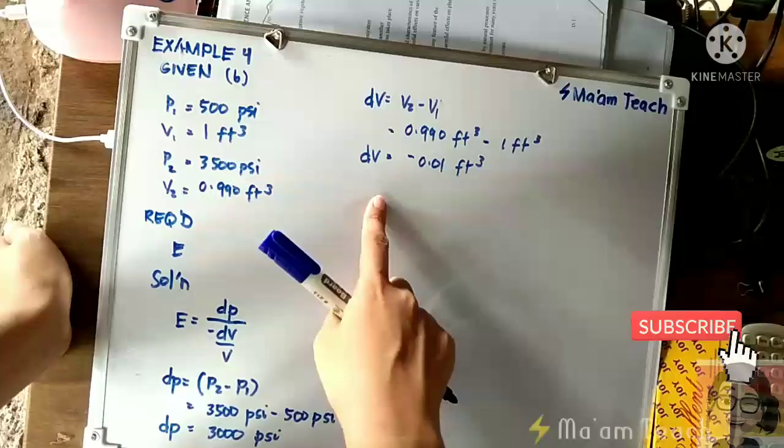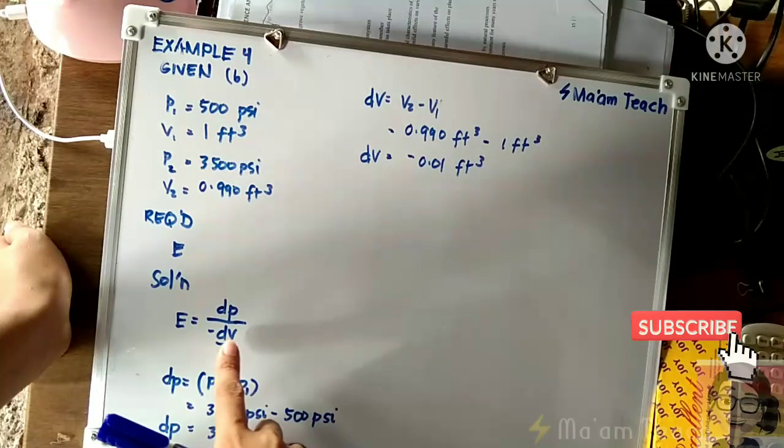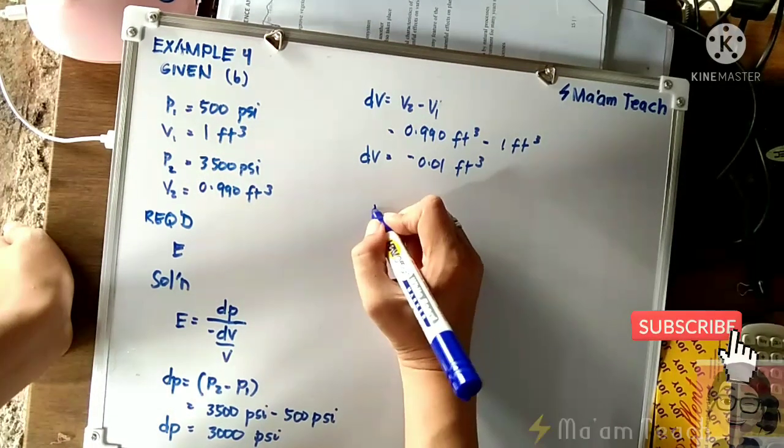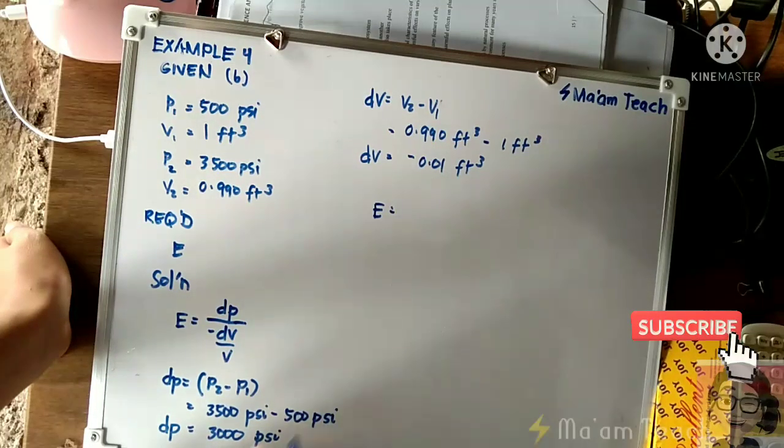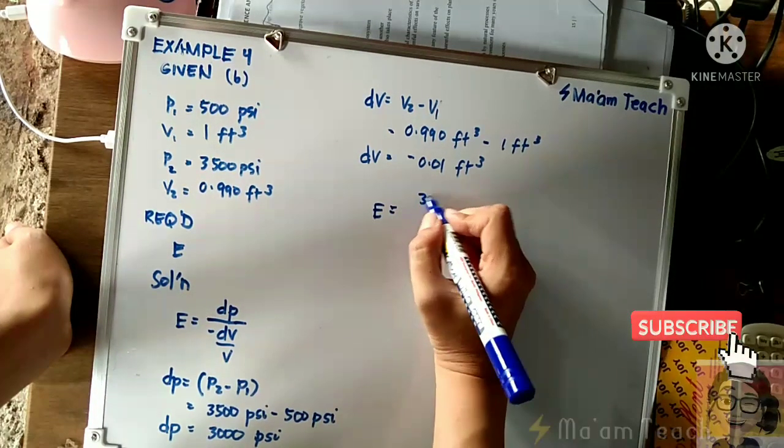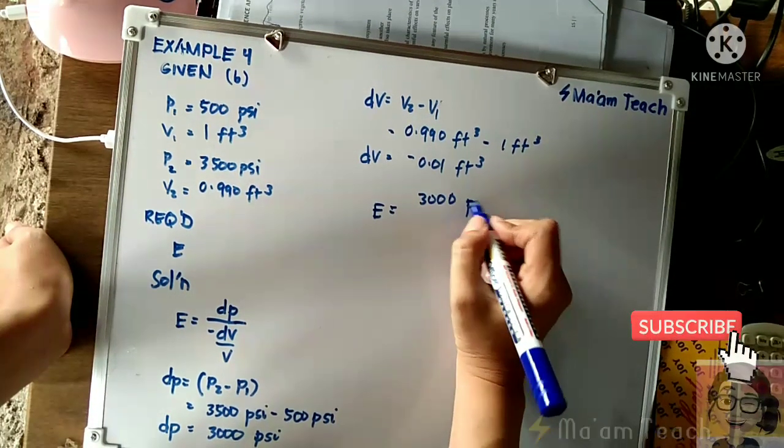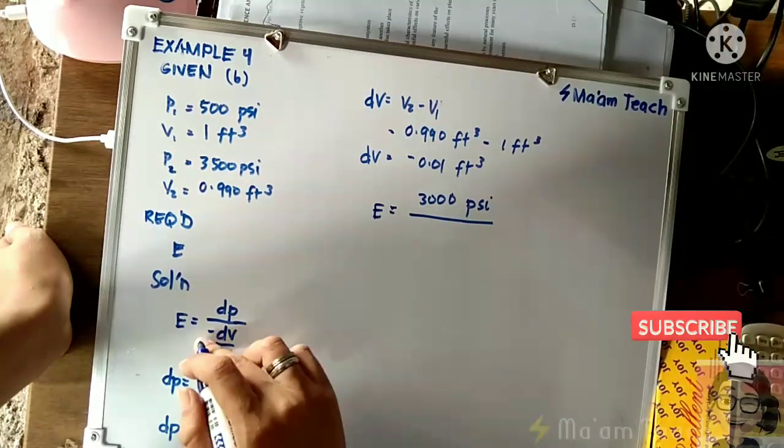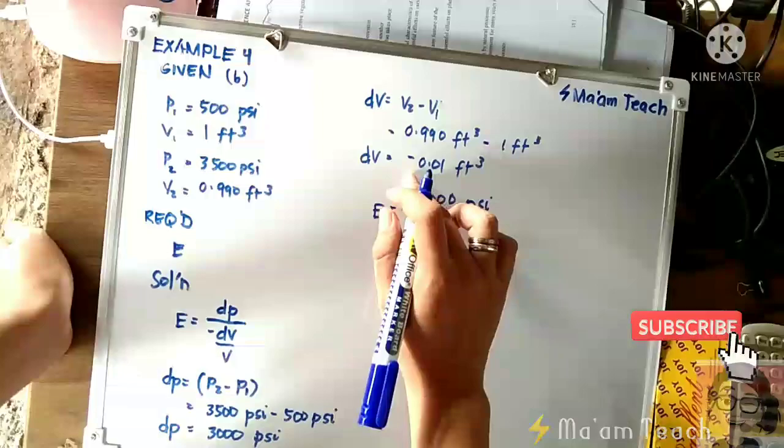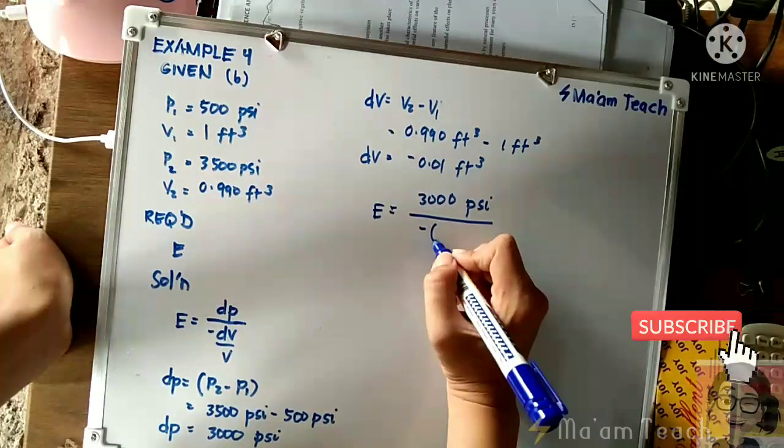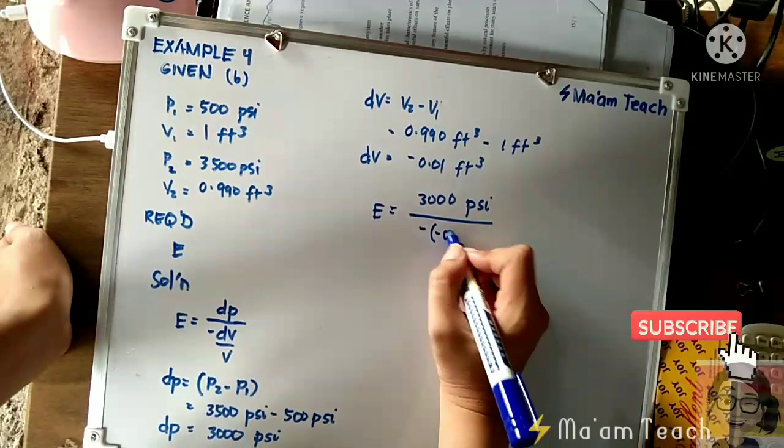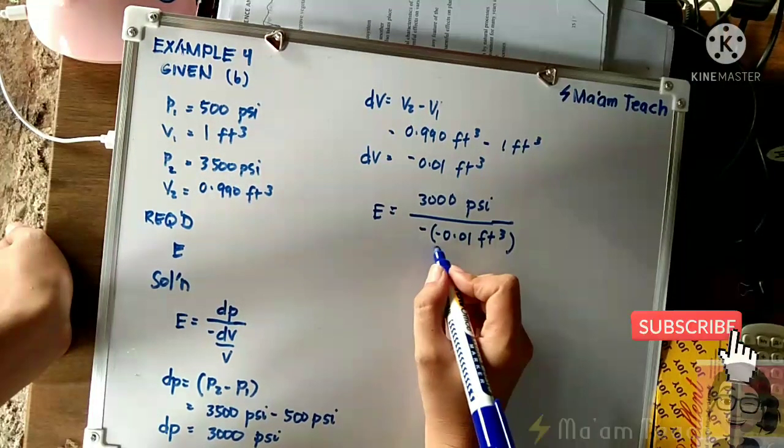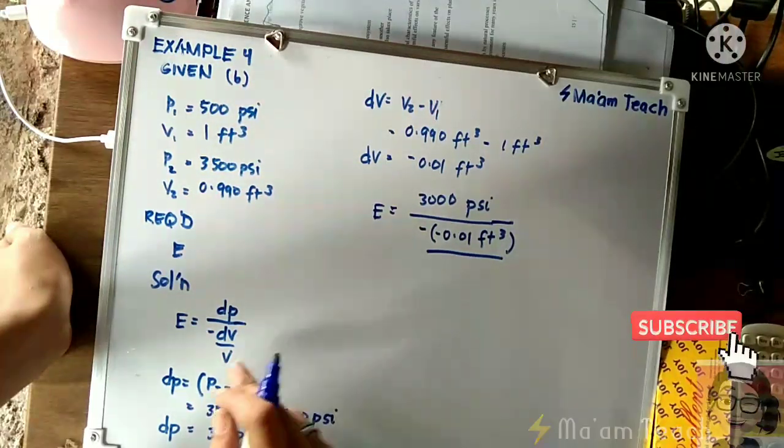So from here, let us substitute into this formula. So E - our dP is 3,000 psi, and negative - don't forget to write the negative - then substitute the value dV which is negative 0.01.